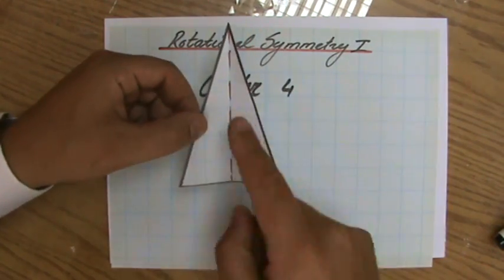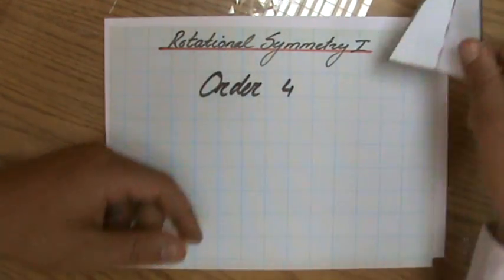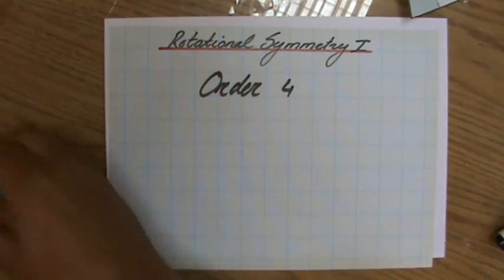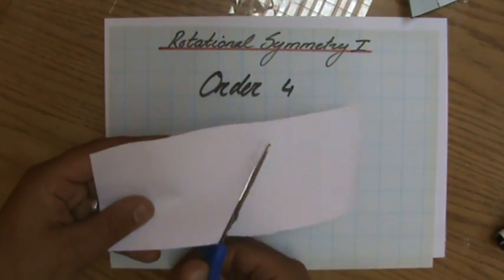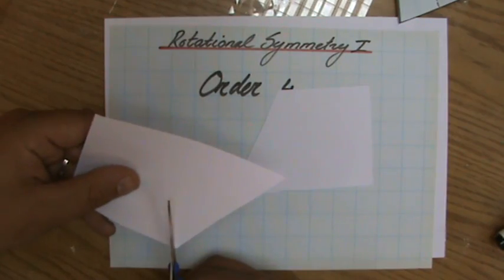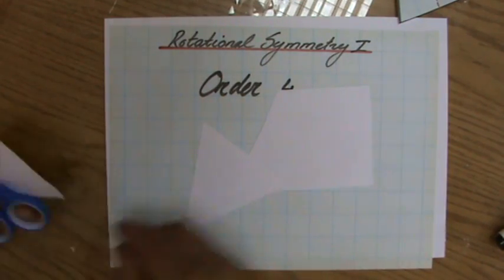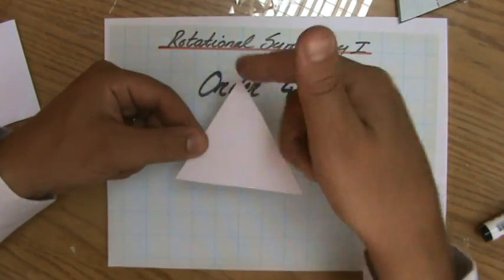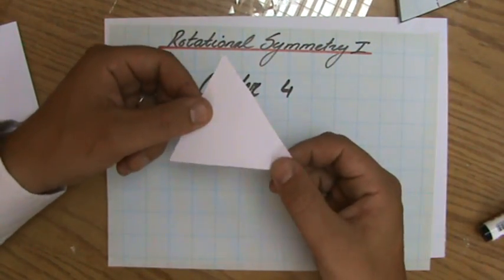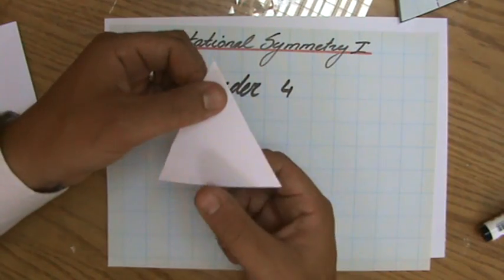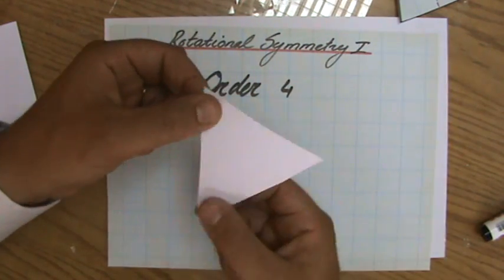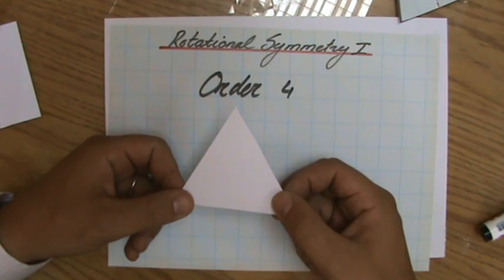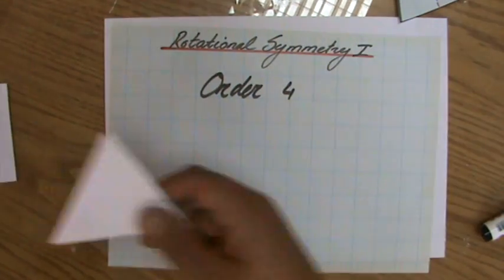So please be careful, by the way, if this would be an equilateral triangle, let me quickly cut an equilateral triangle for you. So all three sides are equal in length. It's an equilateral triangle. What is the order now? One, two, three. So an equilateral triangle has rotational symmetry of order three. Good.